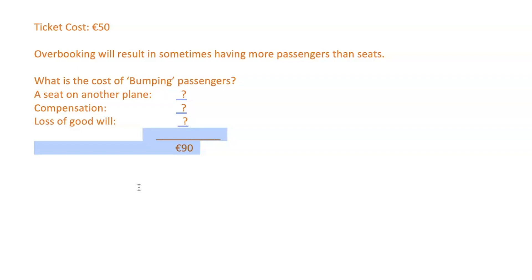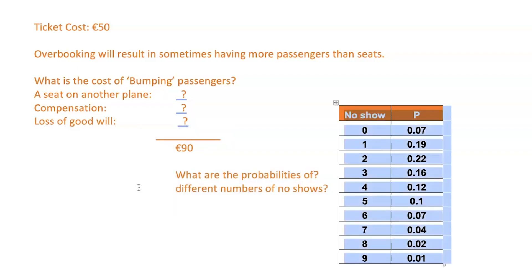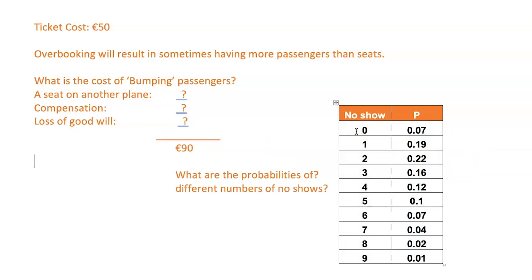To construct an overbooking loss table, the last piece of information we need is the probabilities of different numbers of no-shows. From past experience, the airline have noticed: the probability that zero no-shows happen is 0.07 (7%), the probability of one no-show is 0.19 (19%), and so on through to nine no-shows — a total of 10 different scenarios. The sum of all probabilities equals one, meaning it's a certainty that one of those scenarios will happen.